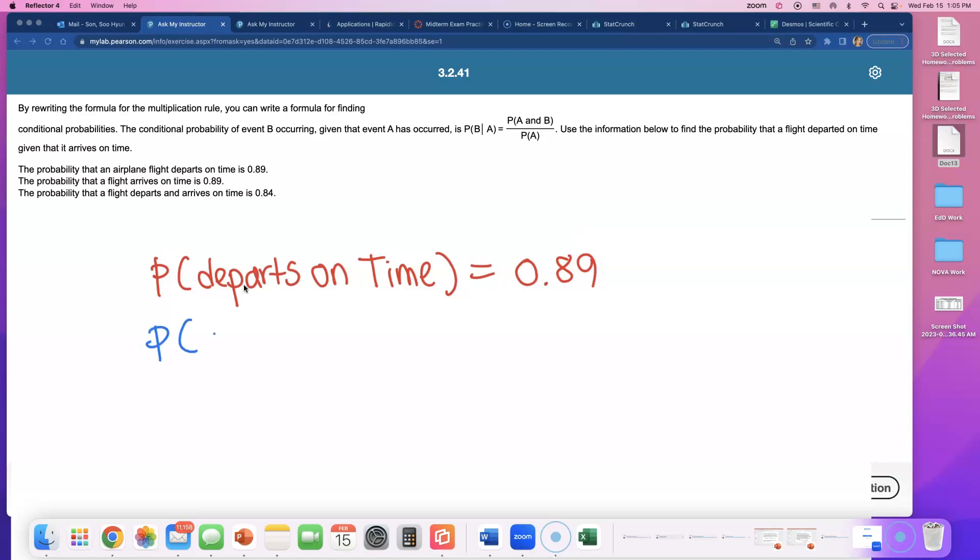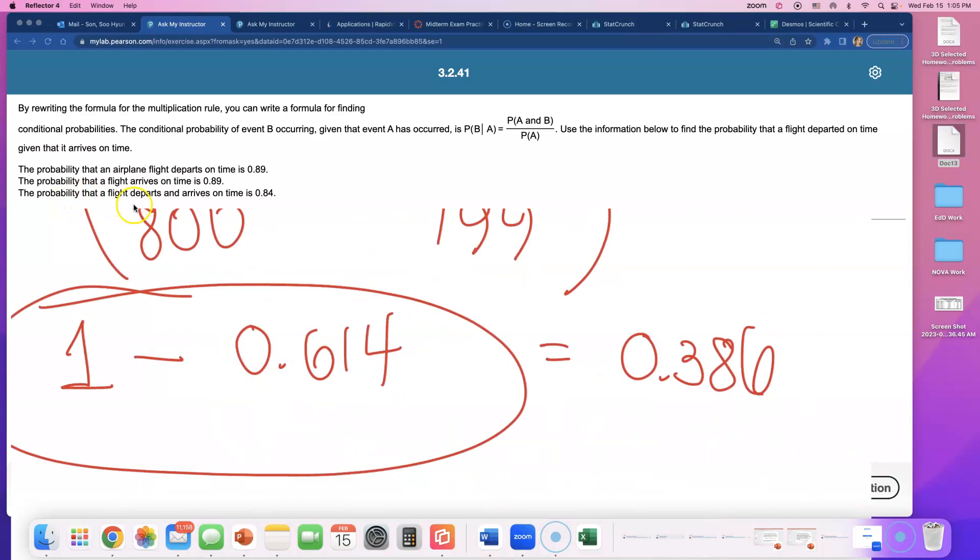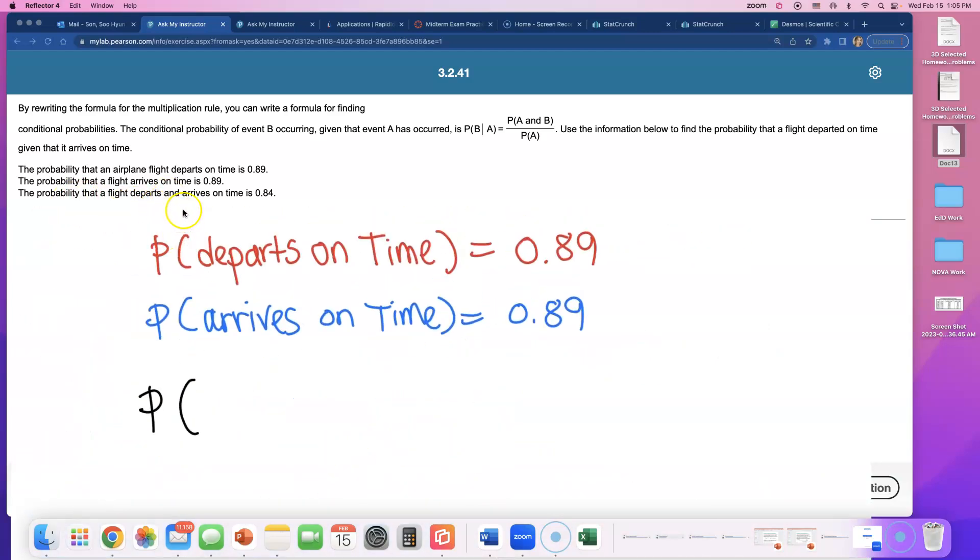The second probability they gave us is arrives on time. Is it higher? I think it should be pretty similar, right? 0.89.